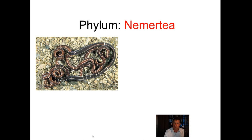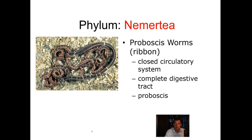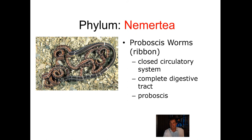Next, we have a phylum called Nemertea — also called ribbon worms or proboscis worms. They have a closed circulatory system, a complete digestive tract — so a mouth on one end and an anus on the other — and they have a proboscis, a mouth structure they can extend and bite with. In the marine environment, there's a very large group of worms that would probably surprise you by how bad they could hurt you. Nemerteans are one such group — if you're handling them, they can actually bite you and take a chunk of skin out.